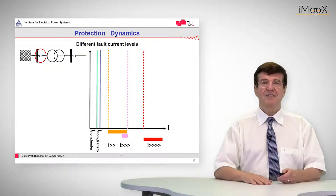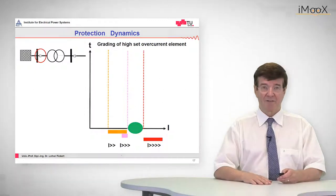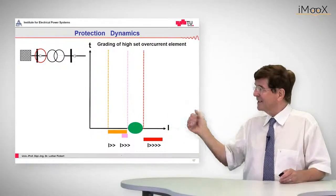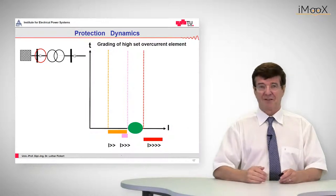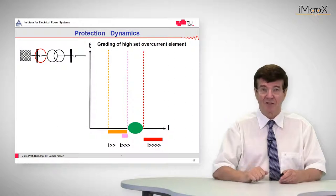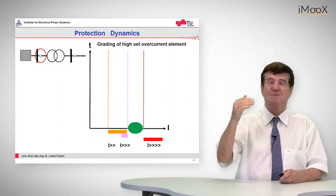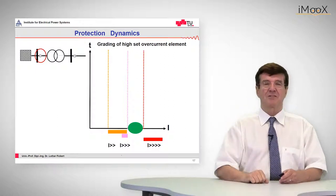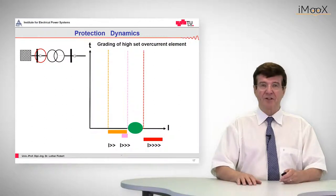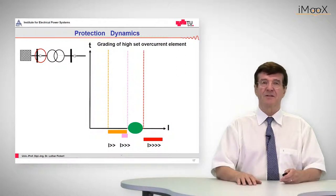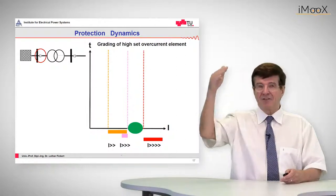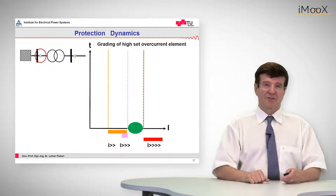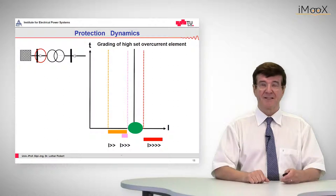Now let's see how to set the high set element of the transformer protection. As we can see, there is a current gap between the fault current level at the high voltage side and that on the low voltage side. So either the current is high — meaning the fault must be on the high voltage side — or it is low, meaning it must be on the low voltage side, and that can be used for discrimination. We concentrate on the green circle, which is a zone where there is no fault current, and this zone can be used to discriminate between high voltage side and low voltage side short circuits. We can set the pickup value of the high set element within this zone.